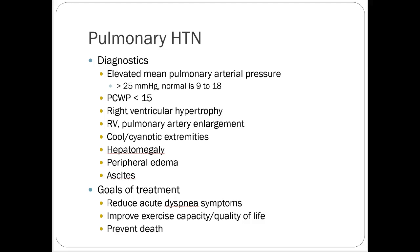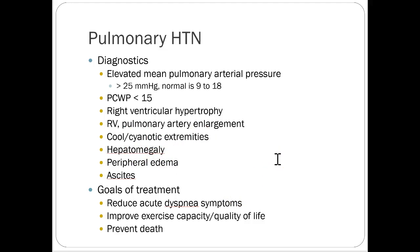Diagnostics: elevated mean pulmonary arterial pressure — normal is 9 to 18; these patients will be above 25 with a low pulmonary capillary wedge pressure. Right ventricular hypertrophy and pulmonary arterial enlargement are seen. Cool cyanotic extremities, hepatomegaly, peripheral edema, and ascites are common. Goals are to reduce acute dyspnea symptoms, improve exercise capacity and quality of life, and prevent death. If untreated, pulmonary hypertension can be fatal within a couple of years.